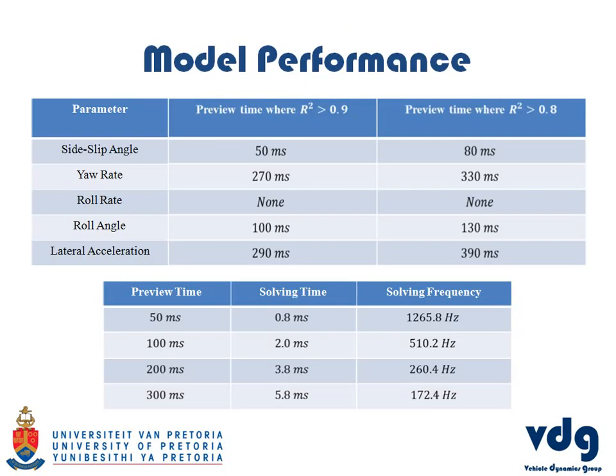Assuming an acceptable coefficient of determination higher than 0.8, these are how far the vehicle can accurately predict each parameter. The lateral acceleration, for example, can be predicted up to 390 milliseconds. The model runs at 100 Hz, and if we predict up to 300 milliseconds, it has a solving frequency of about 170 Hz, meaning it solves faster than real-time.